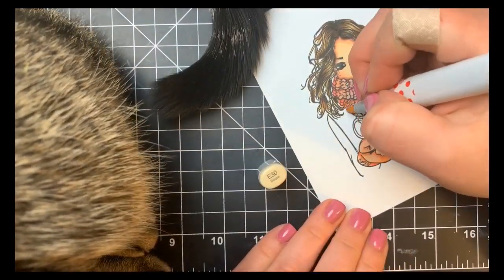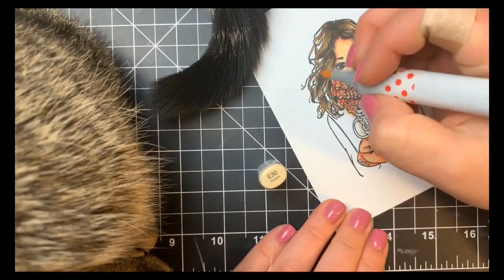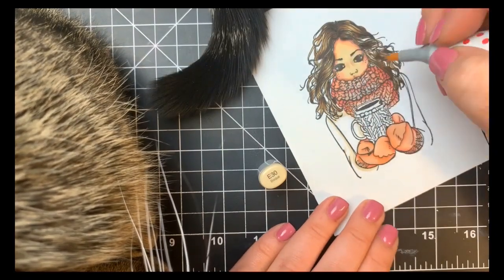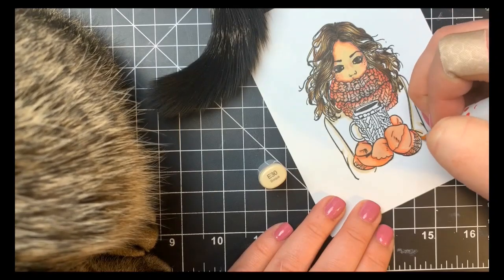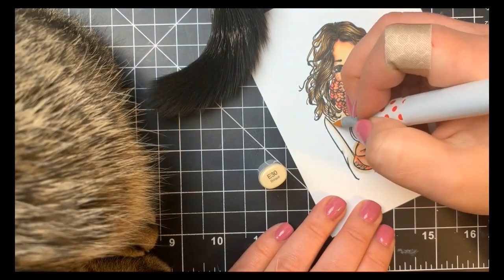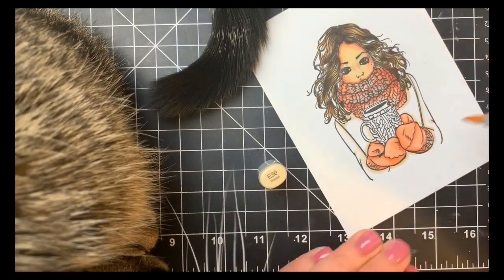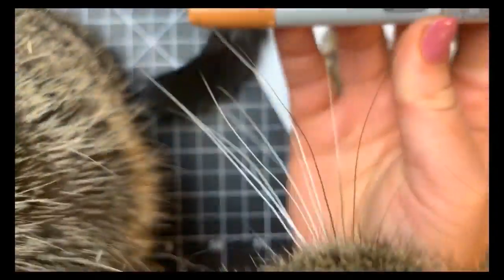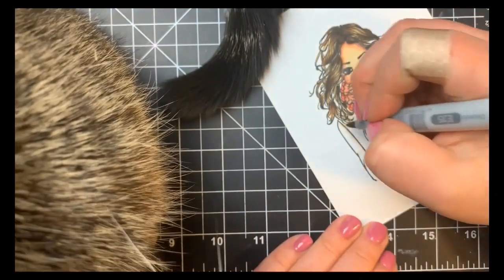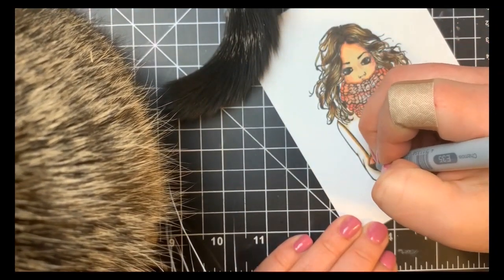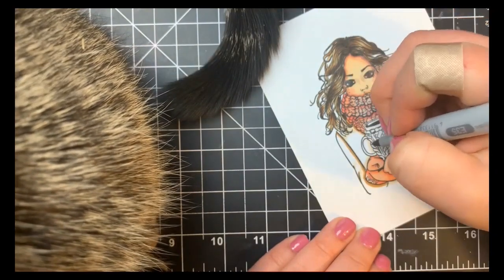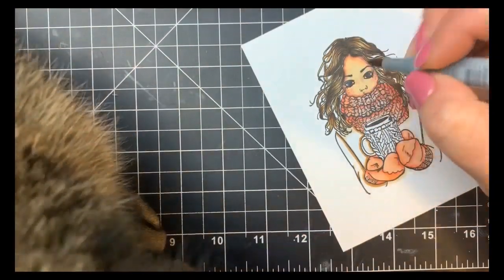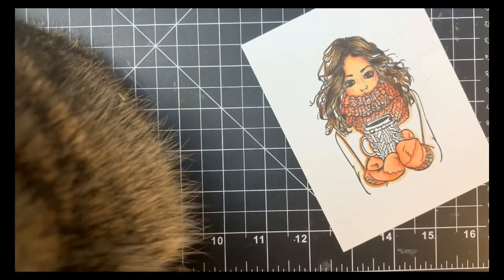For her sweater, I'm using some E30 markers. Again, starting with the lightest color, mapping out those darkest areas. They're on both of her sleeves because they're behind the rest of her body. I'm also using those lines within the illustration on her sleeves to create a little bit of texture. There's also going to be a shadow underneath her—there's Frankie—underneath her scarf and around her little coffee mug. Going in with the darkest color, going over those same areas we mapped out with that lightest color. Then I'll blend that out with the midtone, then back to the lightest color.